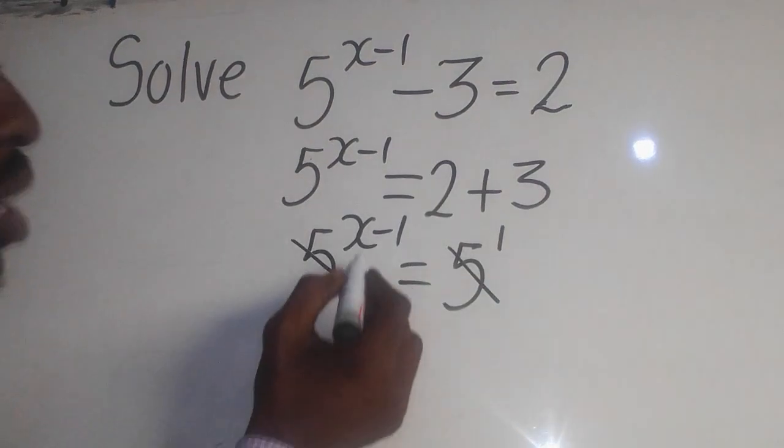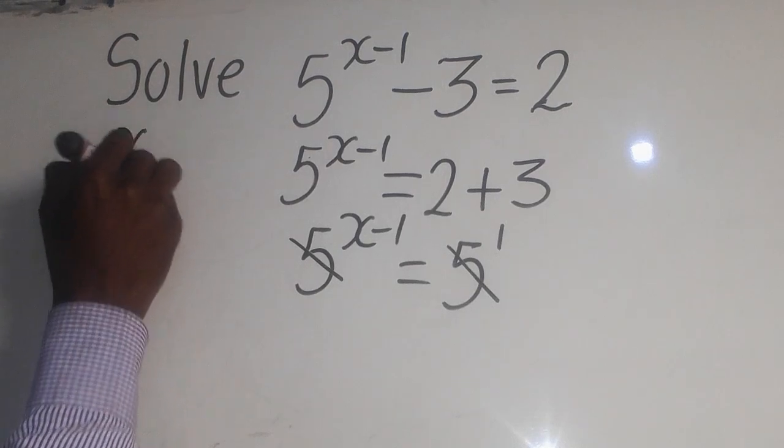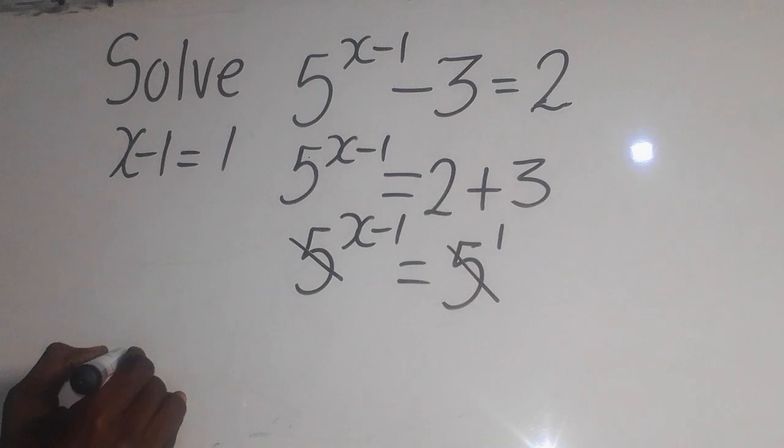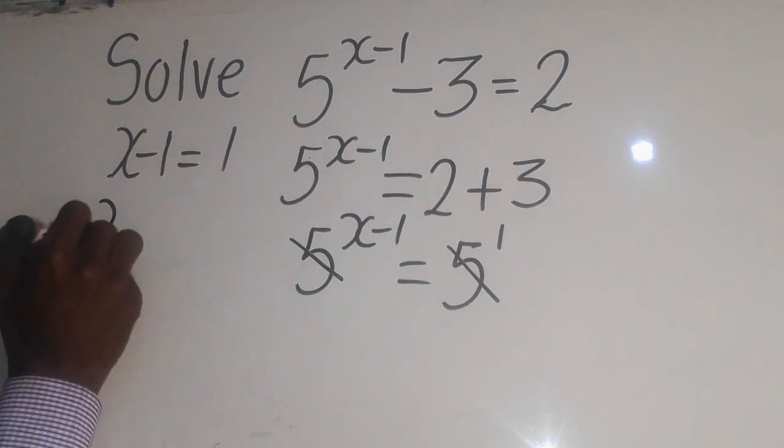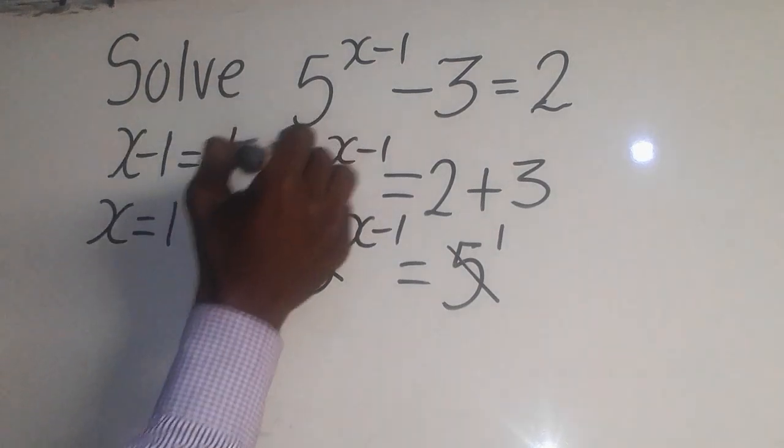Now it is the x minus 1 equal to 1. So it is x minus 1 equal to 1 there. This x will come down like this equal to this one. Now when this negative 1 comes this is what? A positive one.